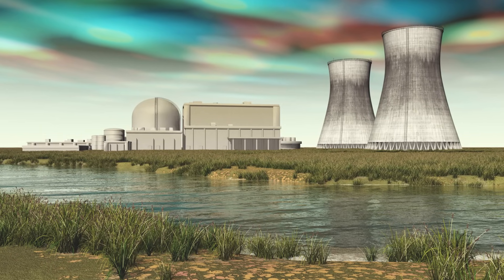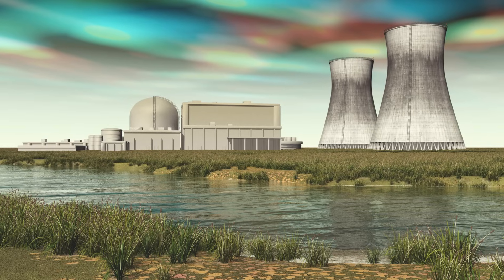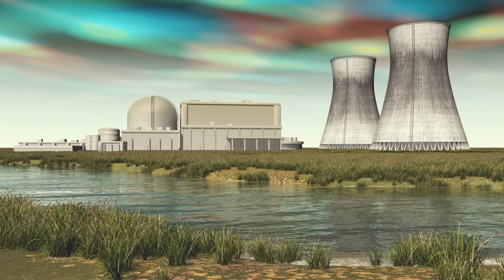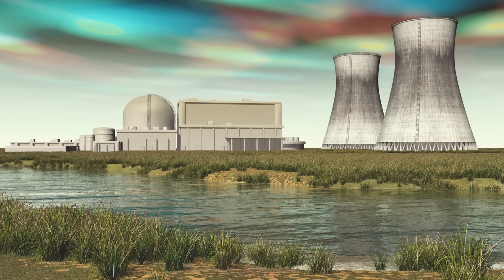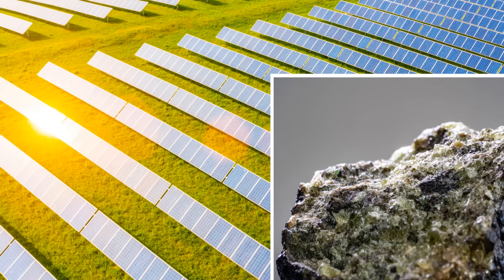In certain very large atoms, like uranium, we can get that nucleus to split apart. This process, called nuclear fission, releases a tremendous amount of energy in the form of heat. Take solar panels, for example.